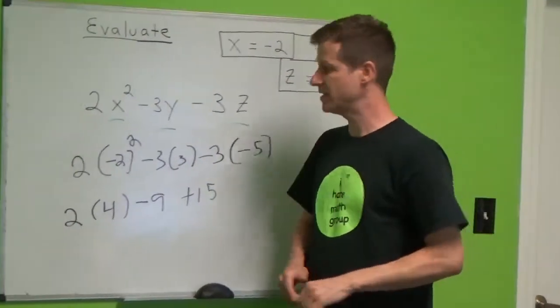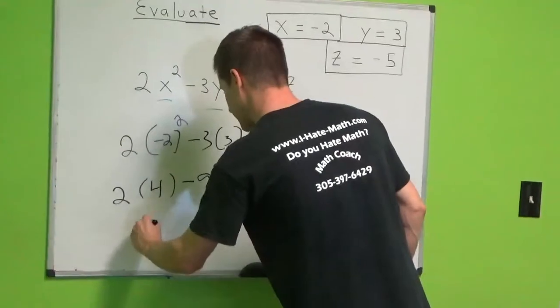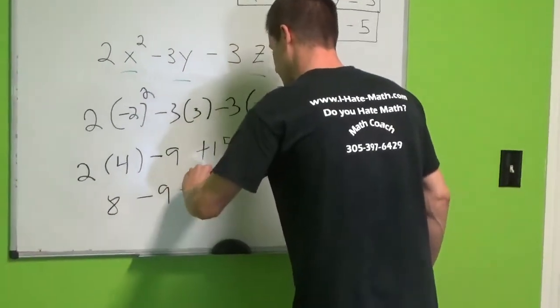Now, we're going to take it a step further. 2 times 4 is 8. Bring down the negative 9. Positive 15.